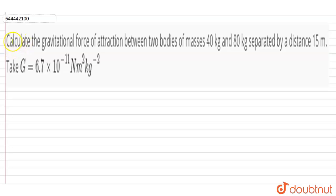Hi, in this question, calculate the gravitational force of attraction between two bodies of masses 40 kg and 80 kg respectively, separated by a distance 15 meter. Take G equals 6.7 into 10 to the power minus 11 newton meter square per kg square.